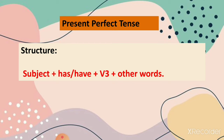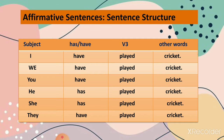The sentence structure for present perfect tense is: subject plus has/have plus verb third form plus other words. Here, 'has' is used for all singular subjects, and 'have' is used for plural subjects as well as 'I' and 'you'. So let us see the sentence structure for affirmative sentences: subject plus has/have plus verb third form plus other words. If the subject is I, you, or any plural noun, we use 'have'; if the subject is a singular noun, we use 'has'.